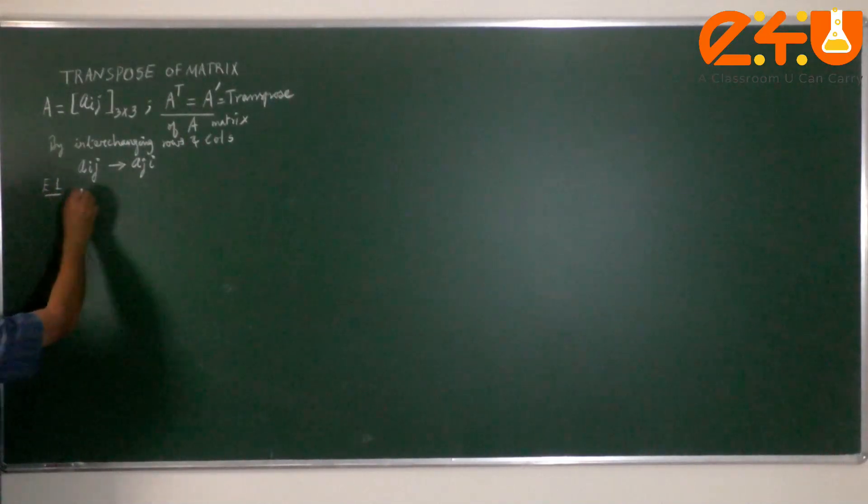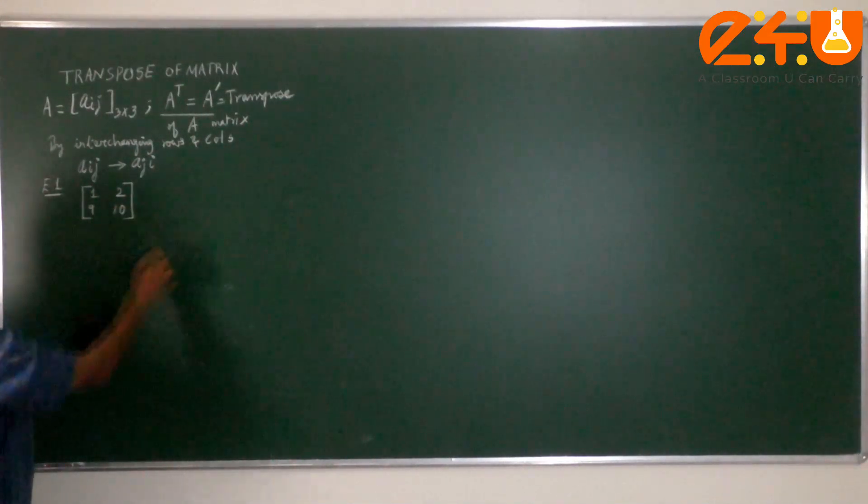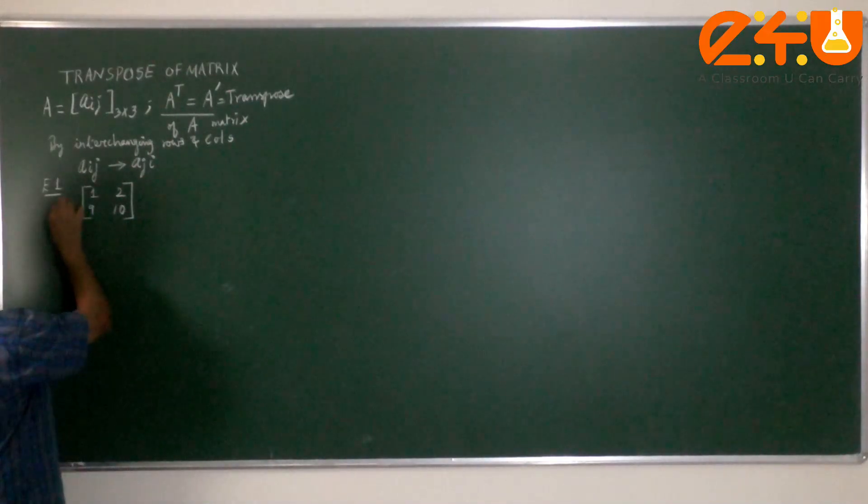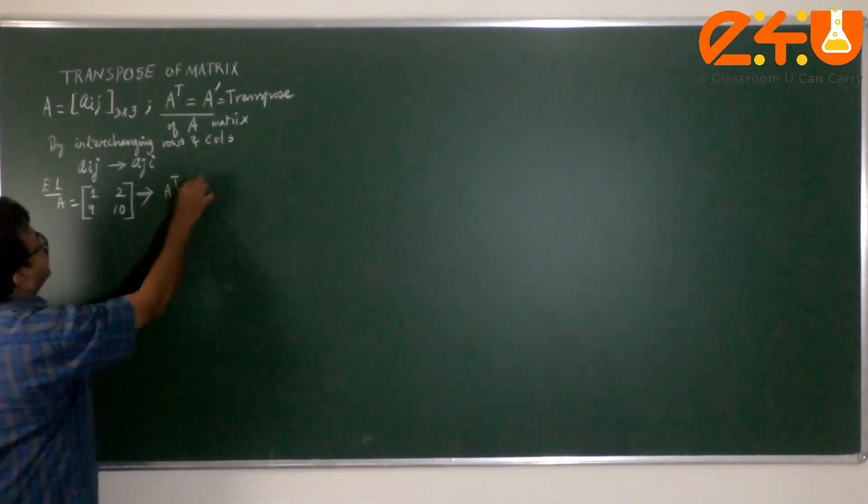Let us take a 2 by 2 matrix: 1, 2, 9 and 10. Let this be matrix A.